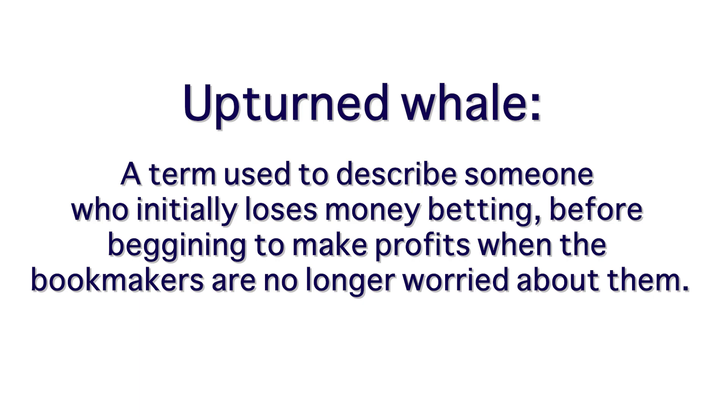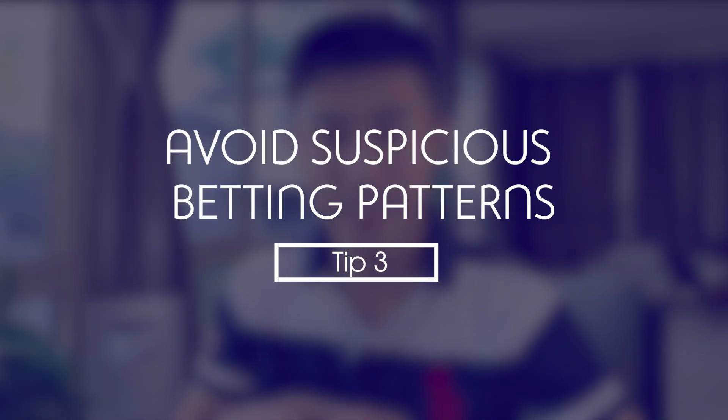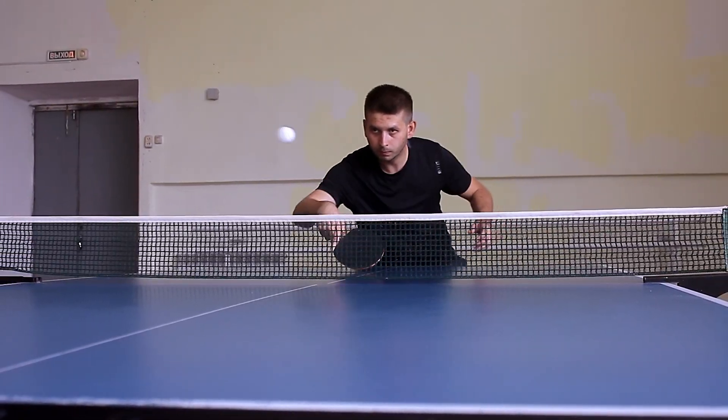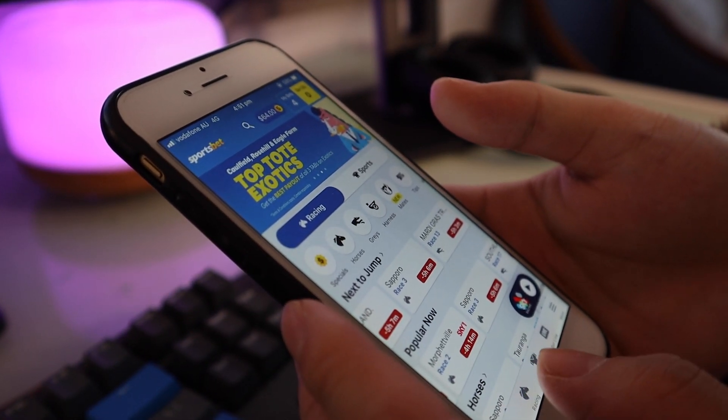This is where the term 'upturned whale' comes from — someone who was a whale donating a lot of money but has since turned smart, now making money off the bookmakers while the bookmaker is no longer worried about them. The third tip is to avoid any suspicious betting patterns that a regular recreational punter wouldn't use. This includes not betting on obscure markets like Russian table tennis, where hardly anyone is watching the sport. If you place a bet there, you might be the only one, making it easy for the bookie to identify your bet and assess what kind of bettor you are.